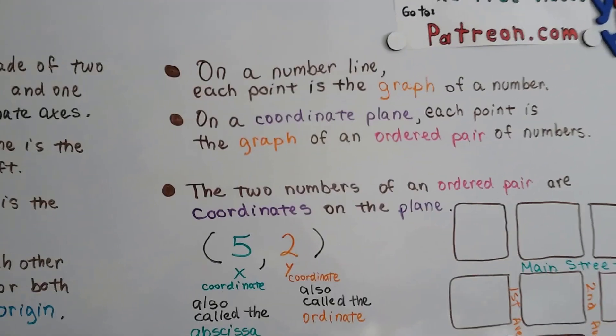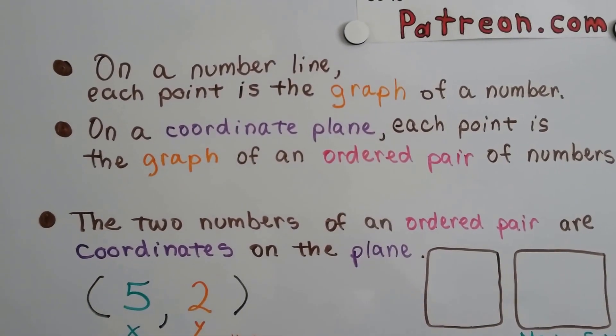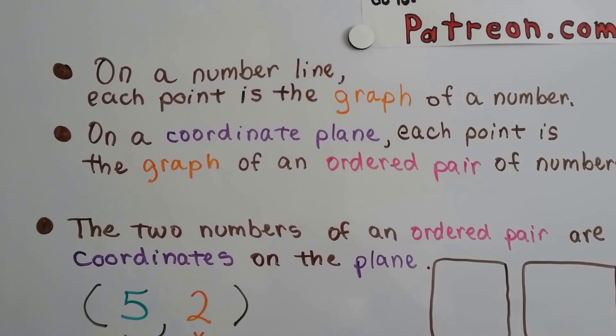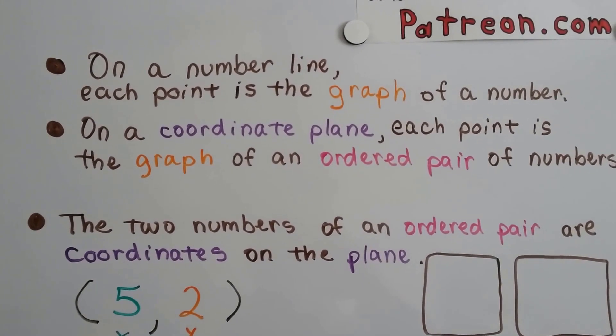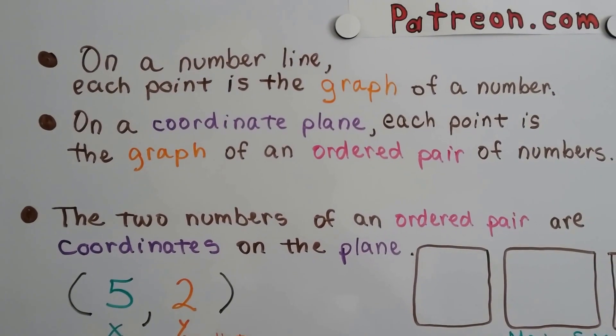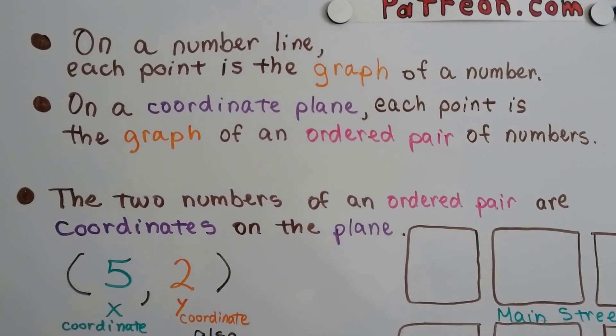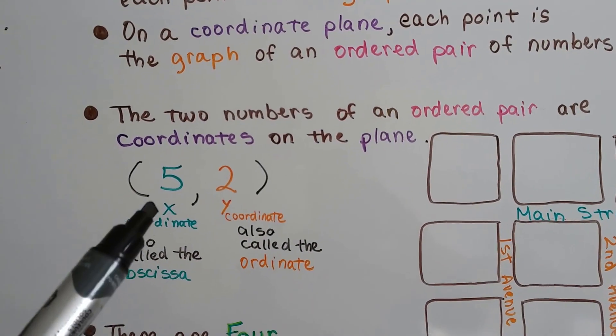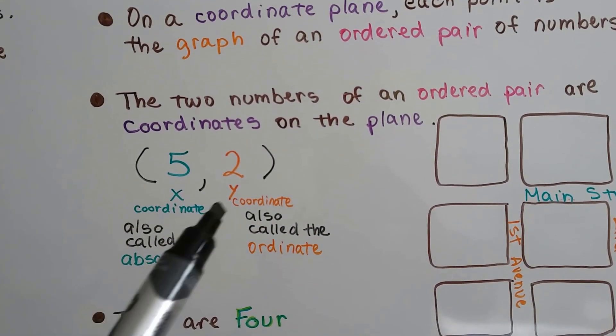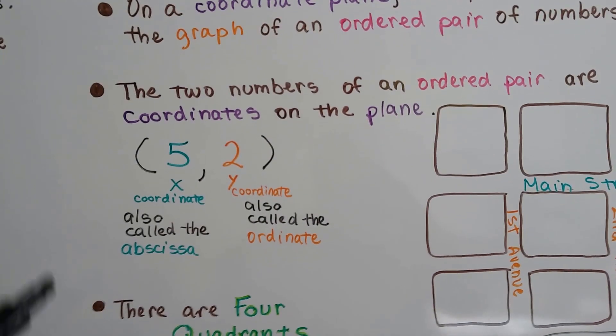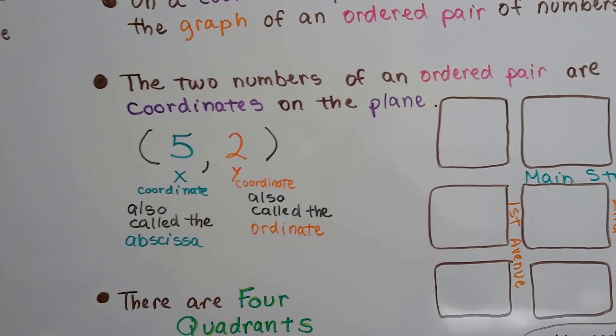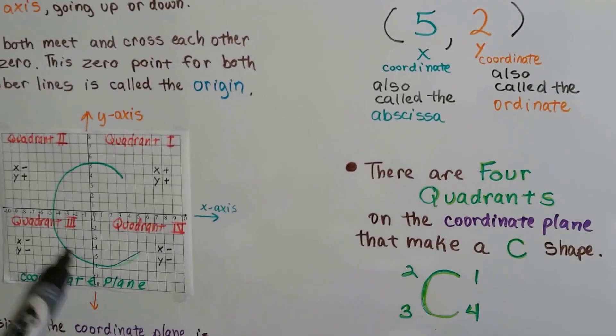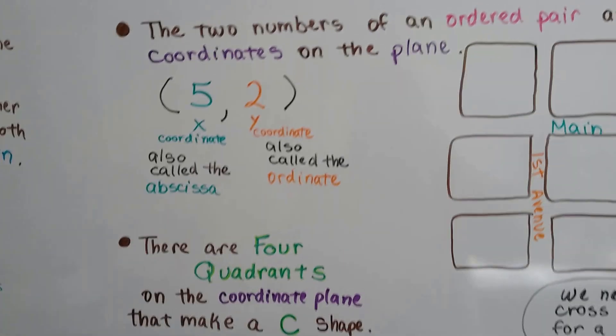On a number line, each point is the graph of a number. When we did number lines in grade school, we graphed a number on the number line. Well, on a coordinate plane, each point is the graph of an ordered pair of numbers. There are two numbers of an ordered pair, and they're the coordinates on the plane. We have an x-coordinate and a y-coordinate, and the x is always first and the y is always second. The x is also called the abscissa, and the y is also called the ordinate.